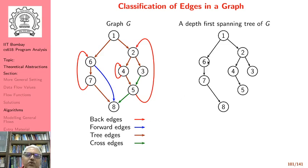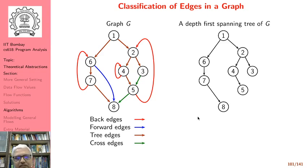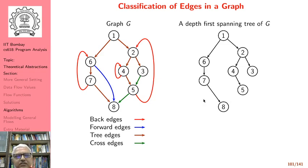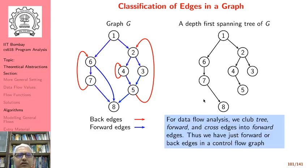A forward edge is an edge from a node to its descendant — not immediate but some other descendant. For example, 6 to 8 is a forward edge. Cross edges go from a node to another node with which it has neither a descendant nor ancestor relationship. As far as we are concerned, we just distinguish between back edges and forward edges, clubbing tree edges, cross edges, and forward edges all into what we call forward edges.